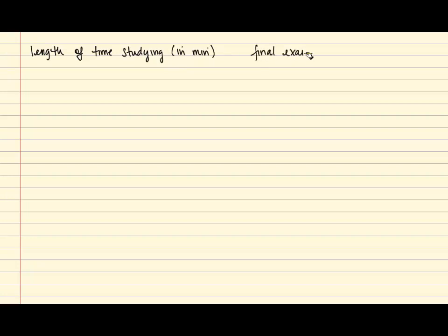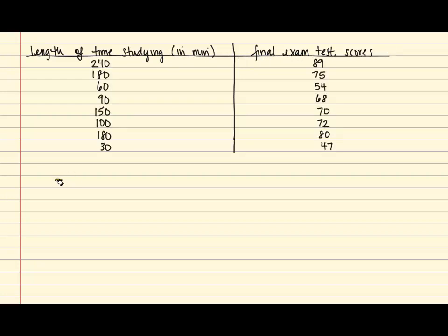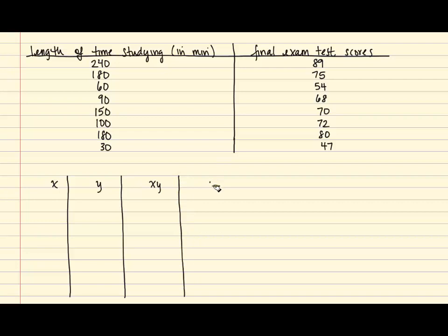To calculate r, first let's recall the original data. The length of time studying in minutes was identified as x, and final exam test scores was identified as y. In this second step, we're going to create a table which includes x, y, xy, x squared, and y squared. By creating this table, we can then find the sums much more easily.